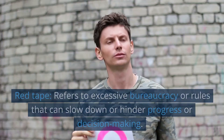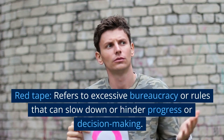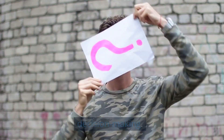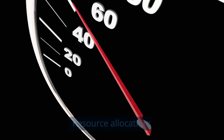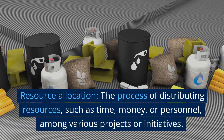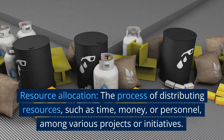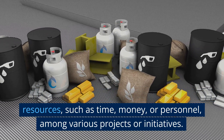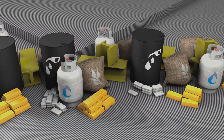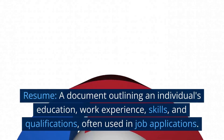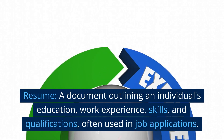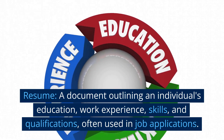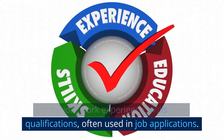Red Tape: refers to excessive bureaucracy or rules that can slow down or hinder progress or decision making. Resource Allocation: the process of distributing resources, such as time, money, or personnel, among various projects or initiatives. Resume: a document outlining an individual's education, work experience, skills, and qualifications, often used in job applications.